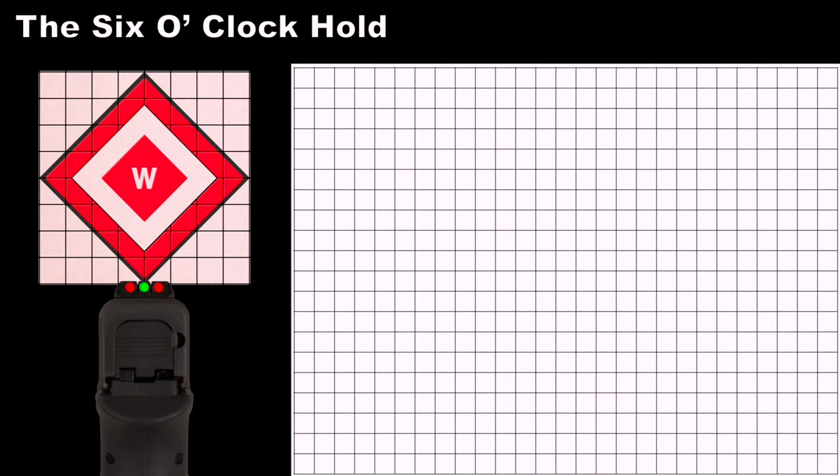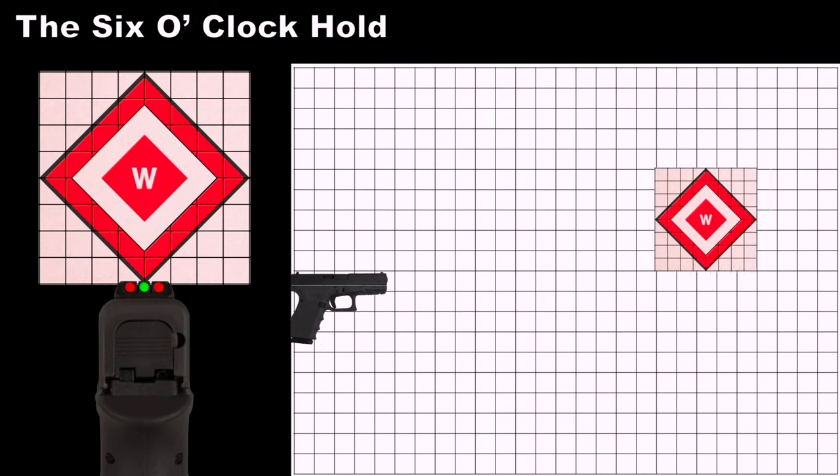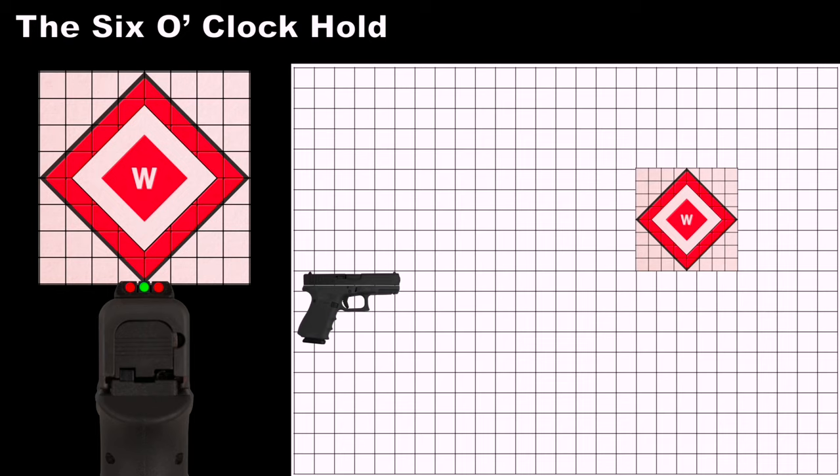The benefit of using this sight picture is that you are able to see the entire circular target. It is very easy to maintain proper elevation between the bottom of the target and the top of the front sight post. However, this method is only effective on the same target at a consistent distance.